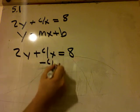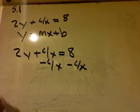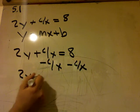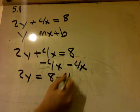So I'm going to subtract 4x, subtract 4x. So this is going to be 2y equals 8 minus 4x.